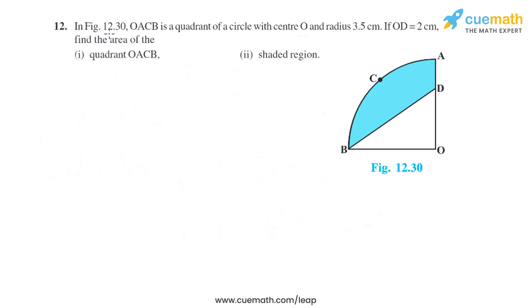Question 12 of this exercise says, in figure 12.30, OACB is a quadrant of a circle with center O and radius 3.5 cm. If OD equals 2 cm, find the area of the quadrant OACB and shaded region.